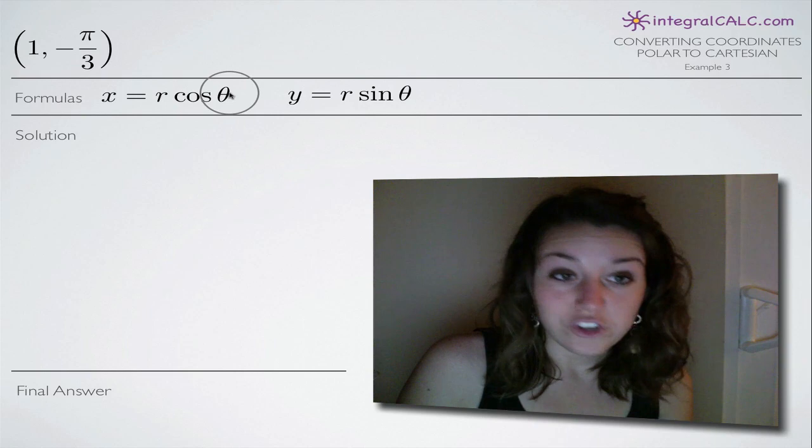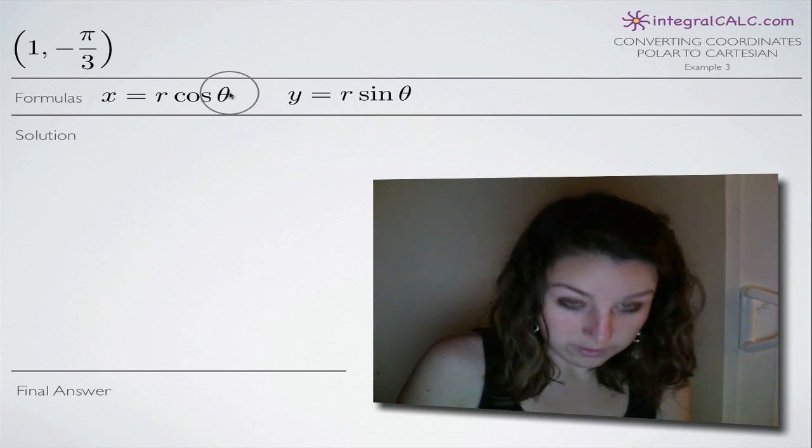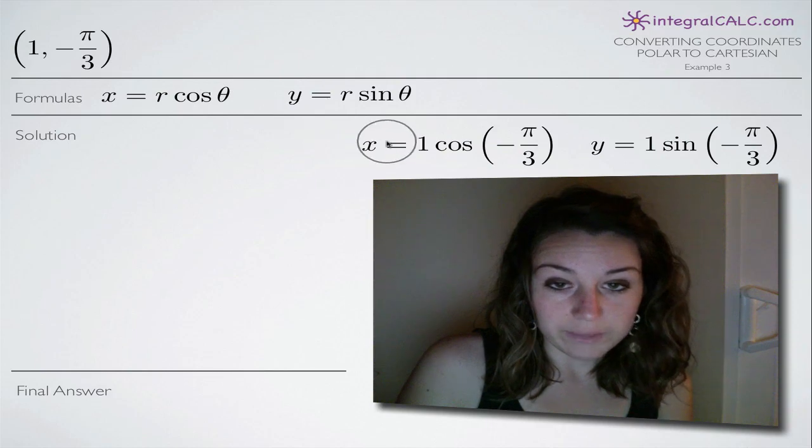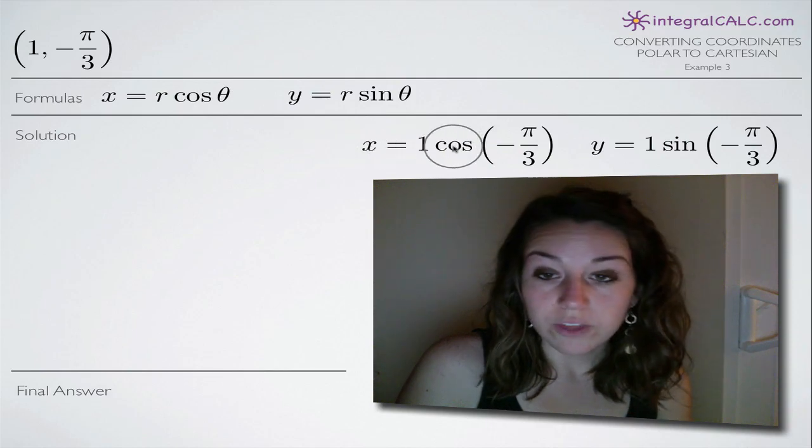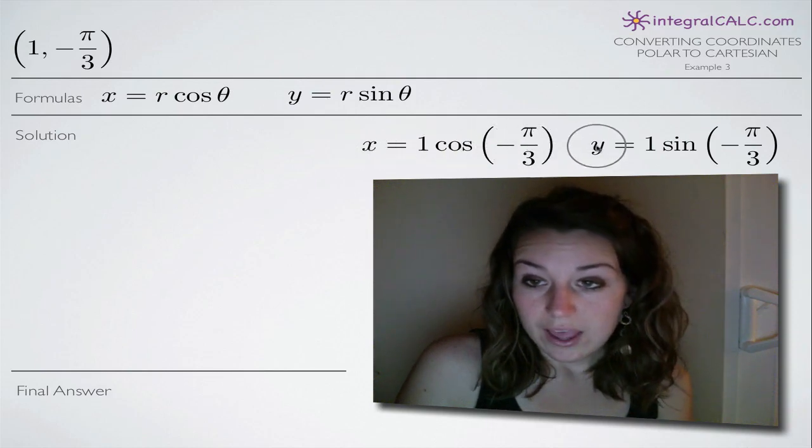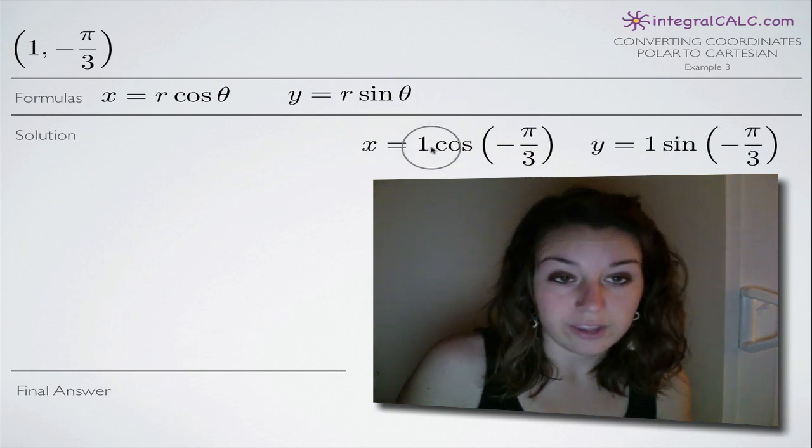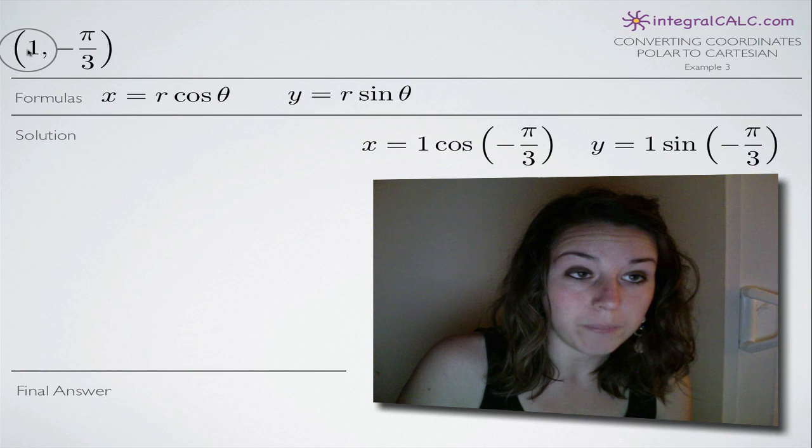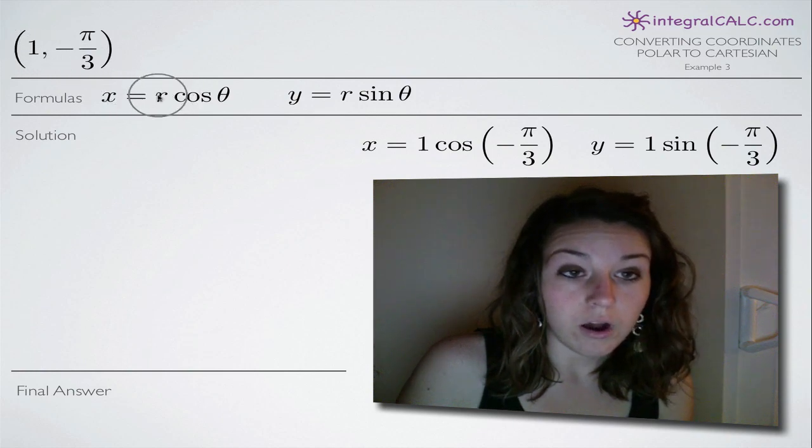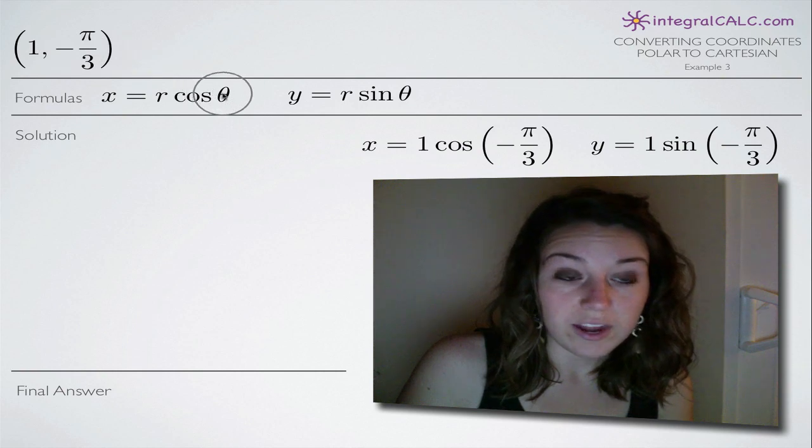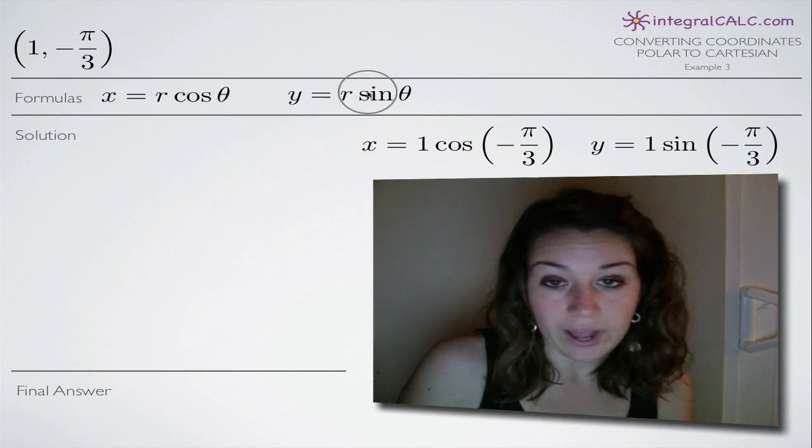So let's go ahead and generate our two formulas for x and y. We're going to get the following: x equals 1 cosine of negative pi over 3, and y equals 1 sine of negative pi over 3. And we got those by plugging in 1 from our polar coordinate for r and negative pi over 3 from our polar coordinate for theta in both of these equations for x and y.